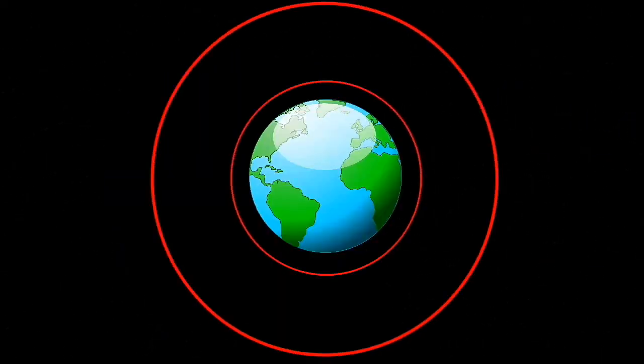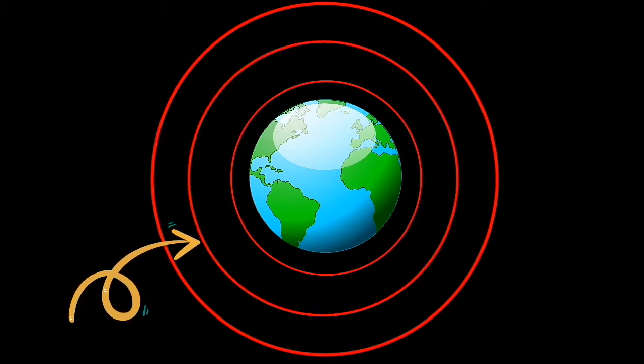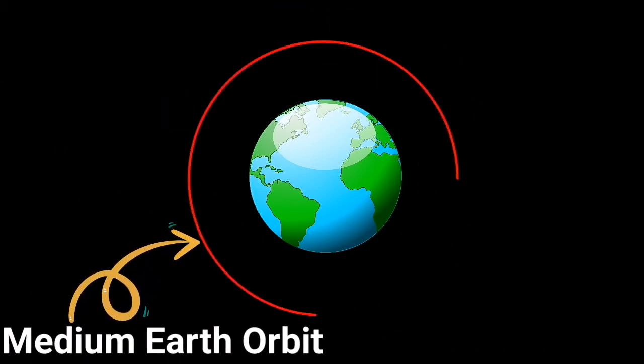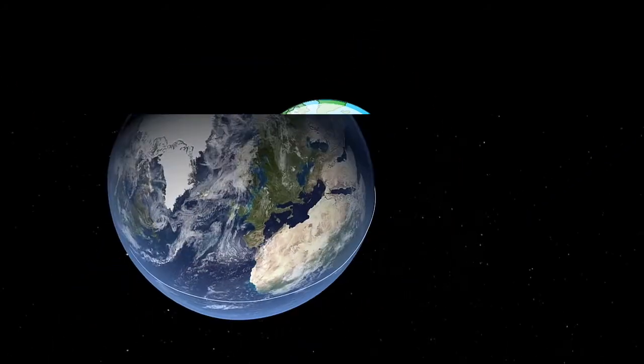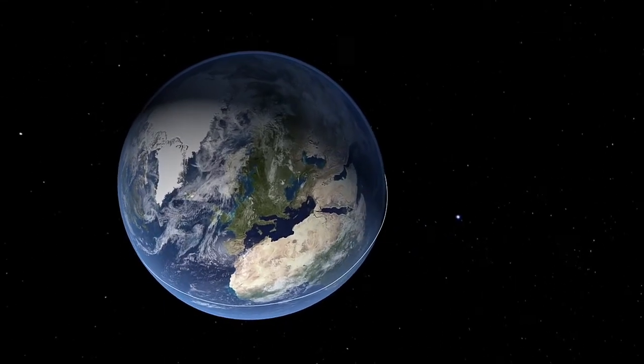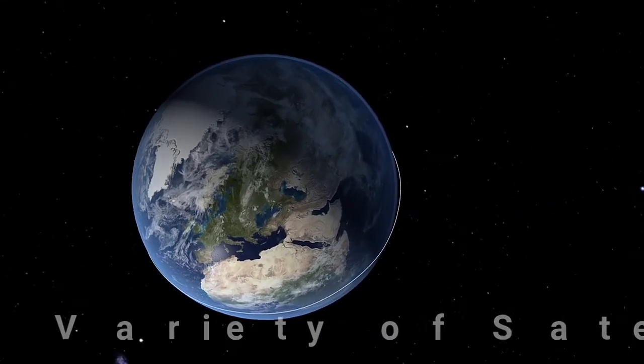Medium Earth orbit is the region of space around the Earth above the low Earth orbit and below the geosynchronous orbit. It is similar to LEO in that it also doesn't need to take specific paths around the Earth, and it is used by a variety of satellites with many different applications.